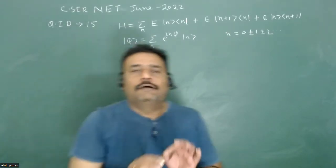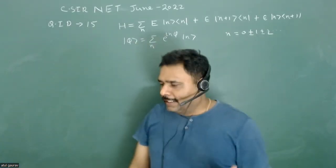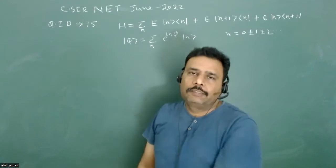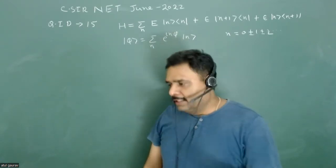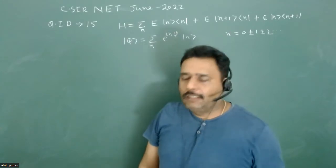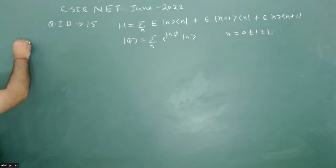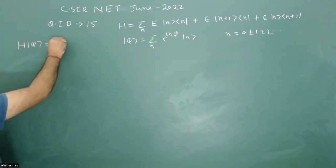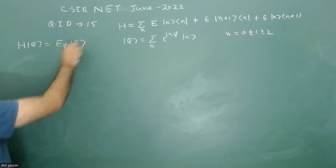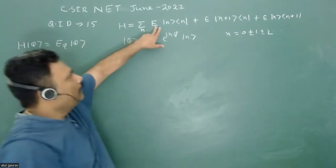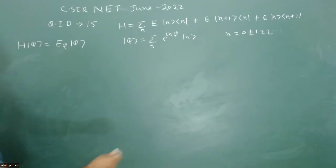The problem is straightforward but the calculation is awesome. The examiner has tested students on how they can handle a summation of a series. The problem is simply H|φ⟩ = E_φ|φ⟩, and the eigenvalue E_φ must be expressed in terms of e_n, ε, and φ.